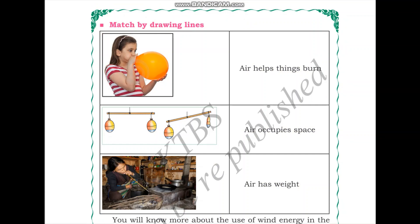Now let us look at this activity — we need to match the diagrams to the property of air listed on the right side. The first diagram shows a balloon being inflated. Balloons are very small before we blow air into them, then become big and light. Air goes inside and occupies the space, so the property shown is: air occupies space.